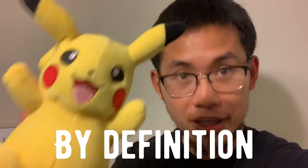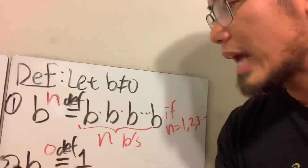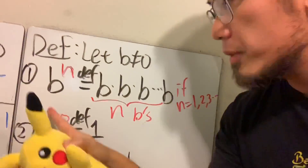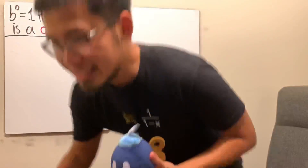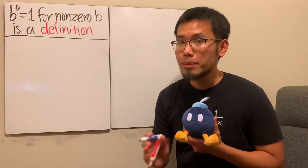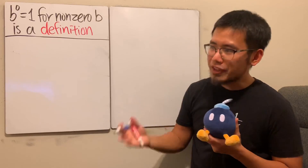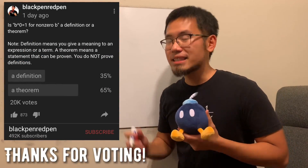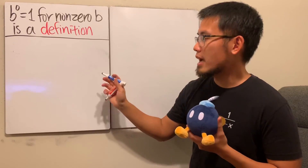This is a Pikachu by definition, and you will not say 'let me prove that this right here is a Pikachu.' That's exactly what I'm talking about right here: b to the zero power is equal to one by definition, because we have not seen the zero exponent before — this definition does not work for zero in the usual sense. In this video I will talk about why this is a definition rather than a theorem, because a lot of you think you can prove it.